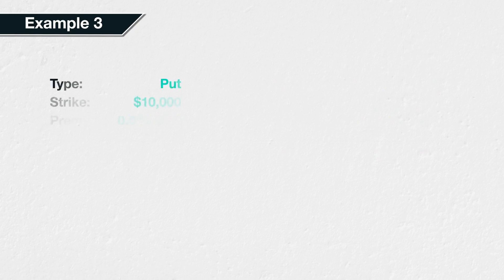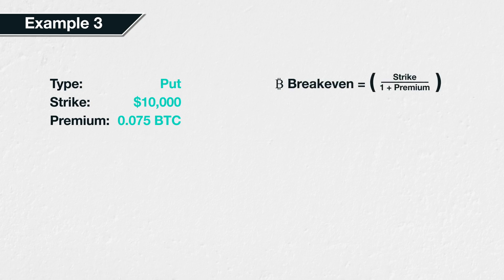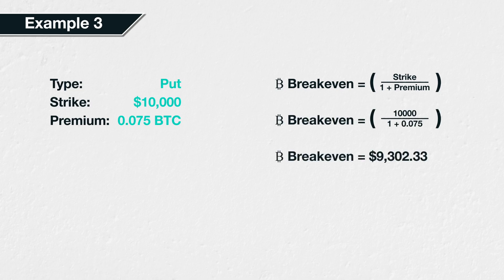Example 3. Suppose we sell a bitcoin put option with a strike price of $10,000 and we collect a premium of 0.075 BTC for it. The break-even is calculated in exactly the same way as strike price divided by 1 plus the premium, which gives us 10,000 divided by 1 plus 0.075, resulting in a break-even point of $9,302.33. As we are short this option, any bitcoin price above this will result in a profit, and any bitcoin price below this will result in a loss.